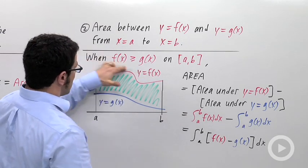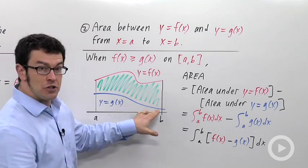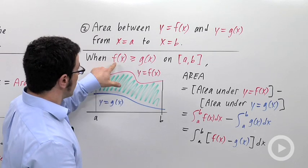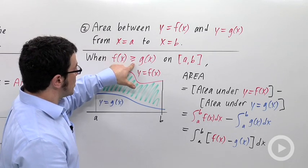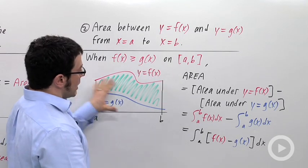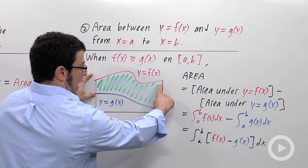Y equals f of x is the higher of the two curves. Y equals g of x is the lower, so that's what I've said here. When f of x is greater than or equal to g of x on the interval, the area, this area here, this band,